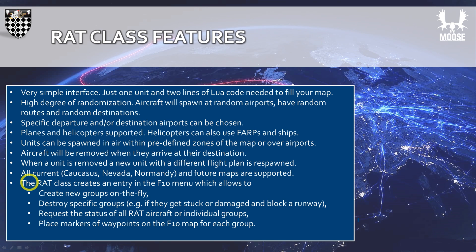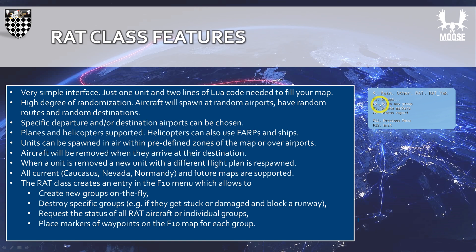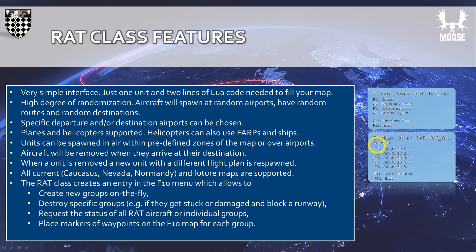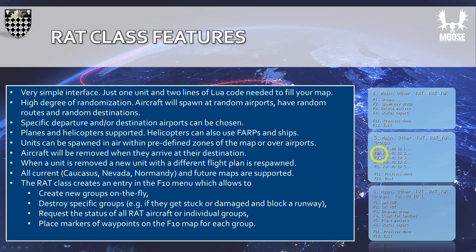One nice-to-have feature is that RUT creates an entry in the F10 menu, which lets you spawn new groups on the fly during the mission. You also have access to all the groups which are currently spawned, and for each group you can set the rules of engagement and the reaction to threats. You can despawn each group individually, place markers of the waypoints on the F10 map, and also request a status report showing where the aircraft is heading and how much fuel it has left.